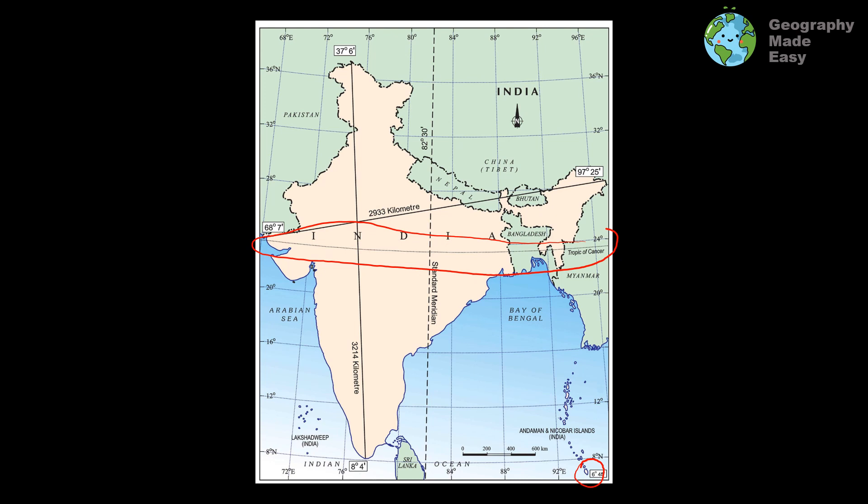We have the standard meridian for India passing through Prayagraj, also known as Allahabad. The value is 82 degrees 30 minutes east — this is the longitude which is dividing India into two equal halves on the eastern and western side. This map is very important in terms of map pointing. In previous ISC question papers, we have seen that questions from this chapter have basically come from the maps.